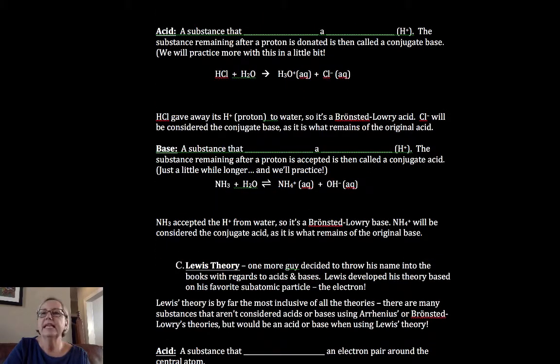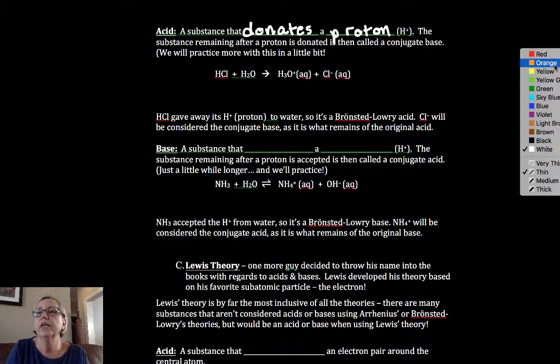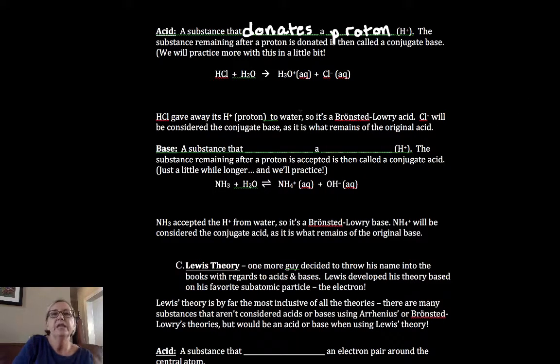So in Bronsted-Lowry, now that we've talked about strength, an acid is a substance that donates a proton to either water or to another substance that's present. In this case, the HCl donated the H+ to the water. So it's considered a Bronsted-Lowry acid.